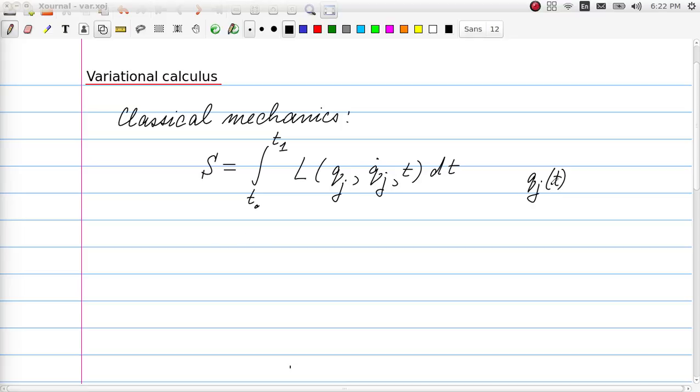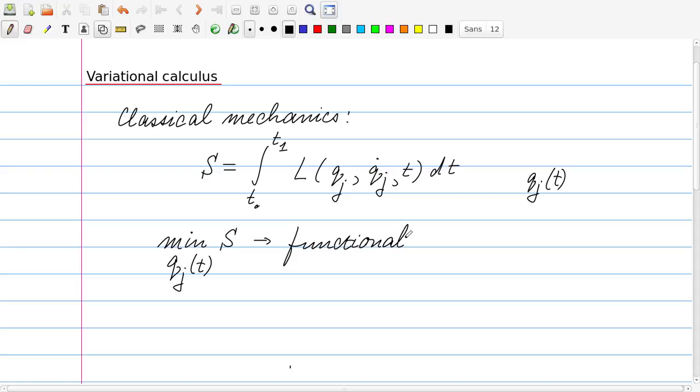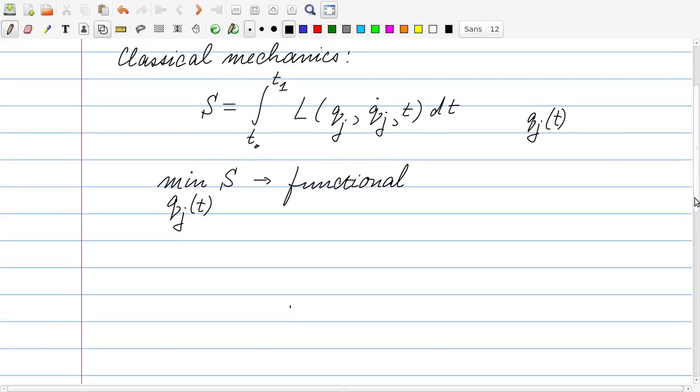And the time evolution of the qj, which obeys Newton's equations for classical mechanics, is found by minimizing the action. And the action depends on these functions qj of t. So we try to find the minimum of s as a function of the functions qj of t. And so s is also called a functional. So a functional is a mapping which assigns to each function or set of functions qj of t a real number by calculating this integral, by evaluating this integral. And we know exactly how to solve this problem, because the solution is given by the Lagrange equations of motion.